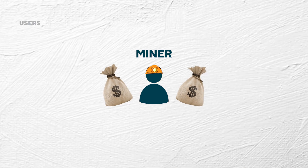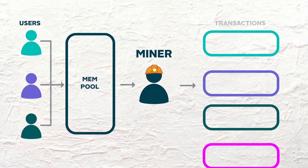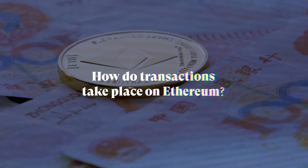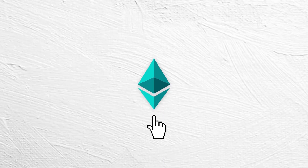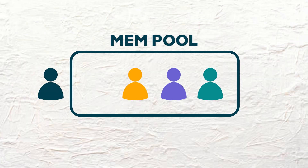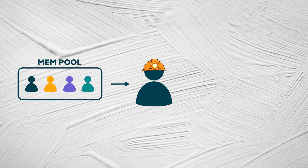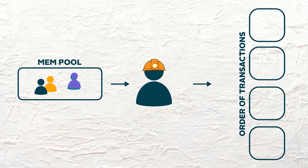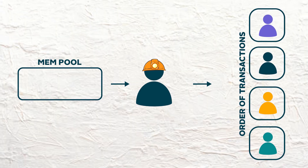MEV refers to the profit that can be extracted by miners or validators who use their privileged access and power to include, exclude, or reorder transactions in a block. When you initiate a transaction on Ethereum, there is a period when it'll be pending, waiting to be added to the blockchain. During this period, your transaction will be stored in a sort of waiting area known as a mempool. Since miners or validators have the power to access these transactions and are responsible for adding them into blocks, they also have the power to include and order them, and this is where MEV comes in.